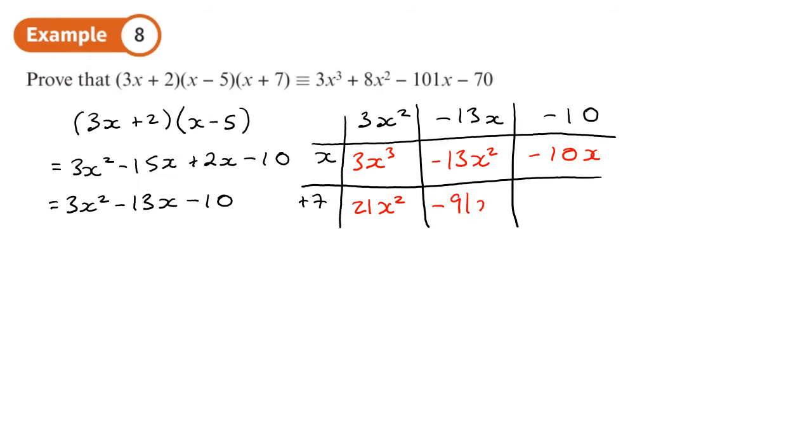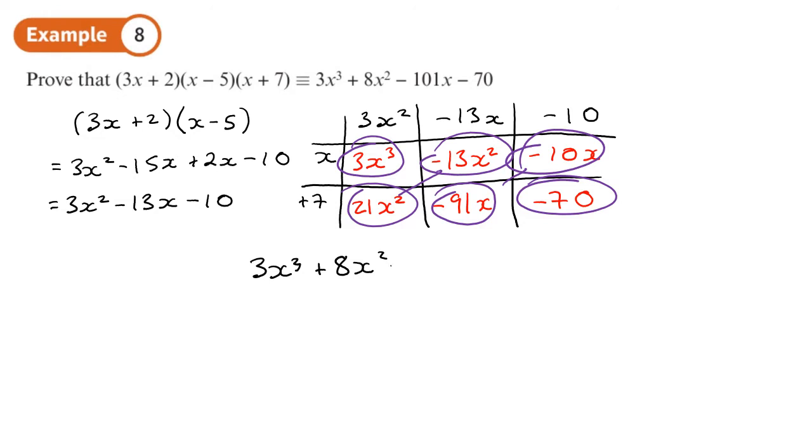So minus 91x minus 70. Let's put the terms together. I'll have 3x cubed, and then 21 minus 13 is going to be plus 8x squared. Then 91 minus 10 is minus 101x minus 70. So we can say that is equivalent to the thing we started with. We've proved it by multiplying out the brackets, as required.